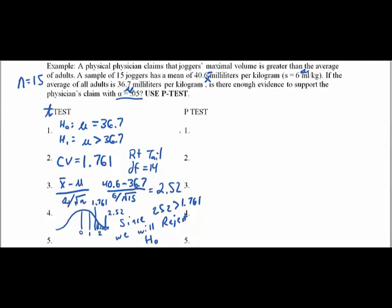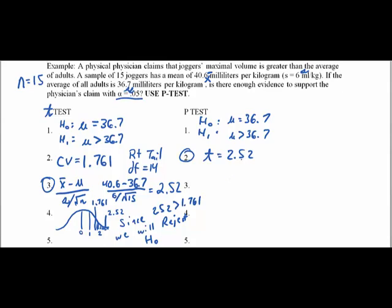That was the t-test, shown several times in the previous video. How does the p-test differ? It doesn't differ at all in terms of the null and alternative hypothesis: mu equals 36.7 versus mu greater than 36.7. For step 2, you use the same formula and get the same test value of 2.52. Then we compare that t-value to the t-chart to see if it fits within the five percent alpha threshold.